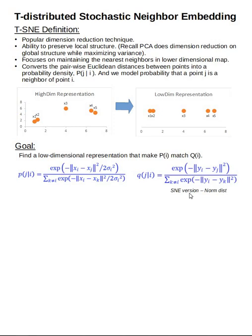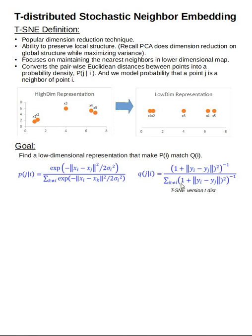In 2008, the T-SNE paper was published. Unlike SNE, which depends on the normal distribution, T-SNE depends on the T-distribution. The T-distribution's Q function uses 1 plus the Euclidean distance squared, inverted, divided by the sum of 1 plus all pairwise Euclidean distances inverted. This is the T-SNE version of the Q function, representing probabilities in the lower-dimensional space.